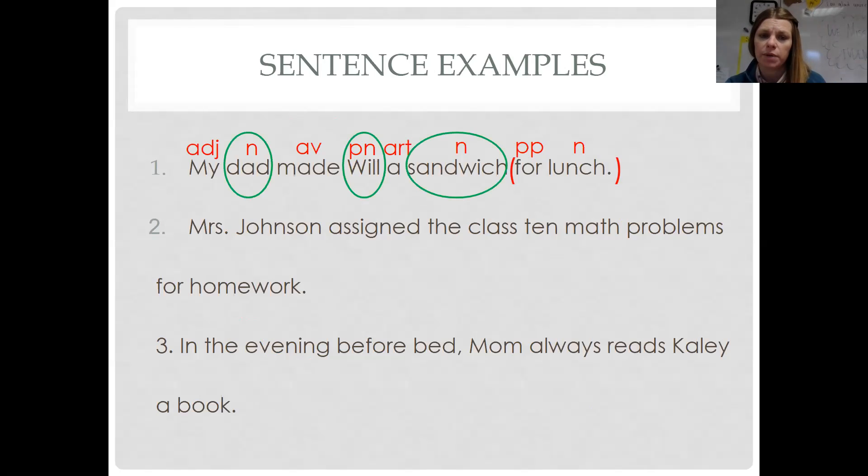Dad. What did dad do? Dad made. Dad made what? A sandwich. For whom? Will. Remember, we don't use that one because it's in a prepositional phrase. Remember, English is really strict on word order. And so your direct object and your indirect object, they're never going to switch places. It doesn't work. It's like dividing by zero in math class. It doesn't work. You just can't do it. So they're going to follow this strict order.